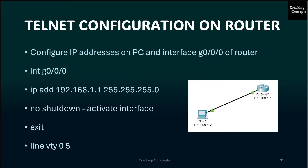After that, we configure the IP addresses on the interface of the router. The interface we are using is g0/0/0. We access it using the command int g0/0/0. Then we set up the IP address and the mask. After that we give the command no shutdown, meaning the port needs to be active throughout. Then we exit from the interface configuration.